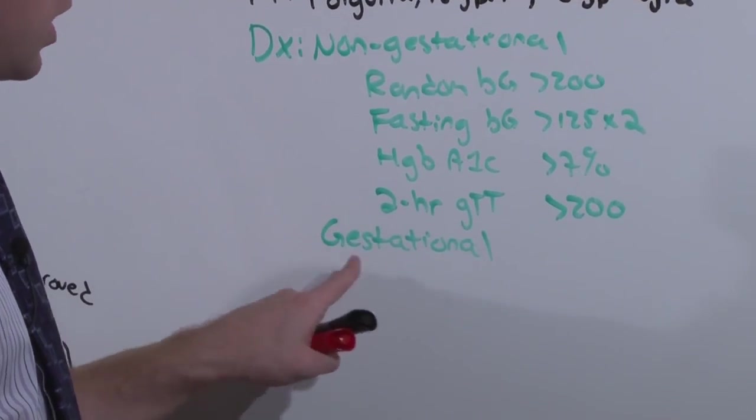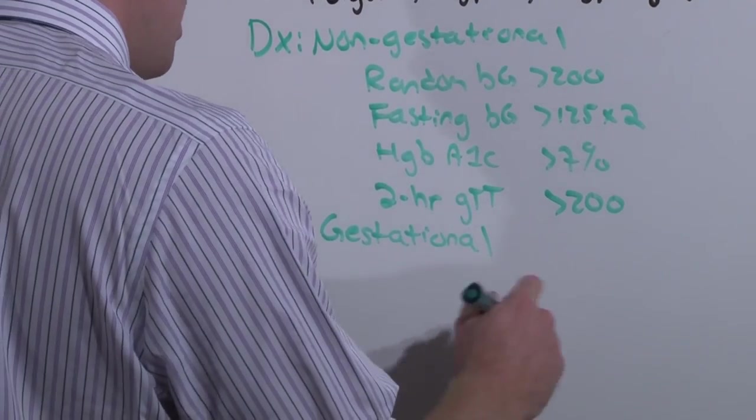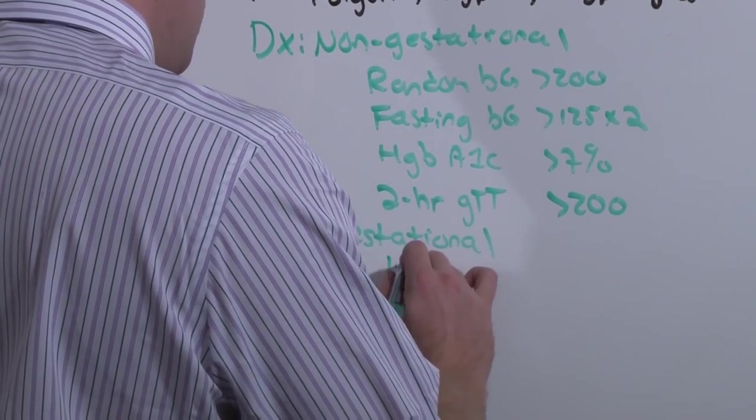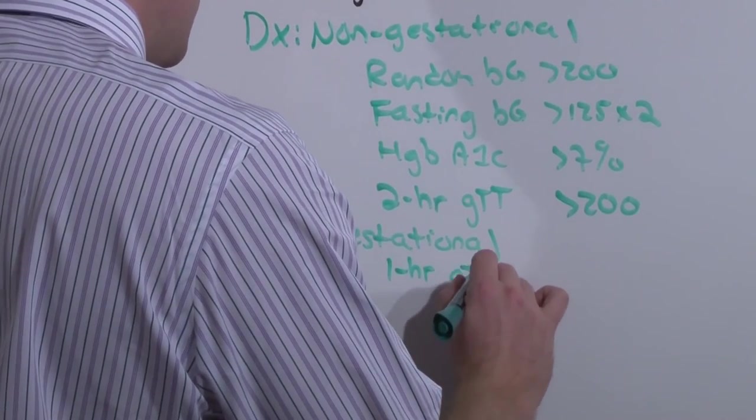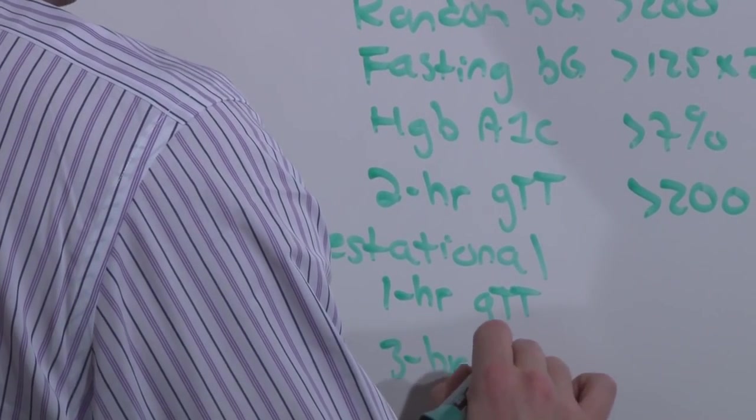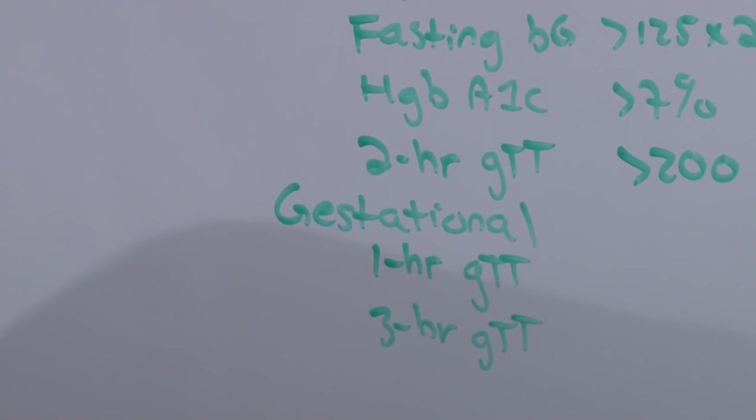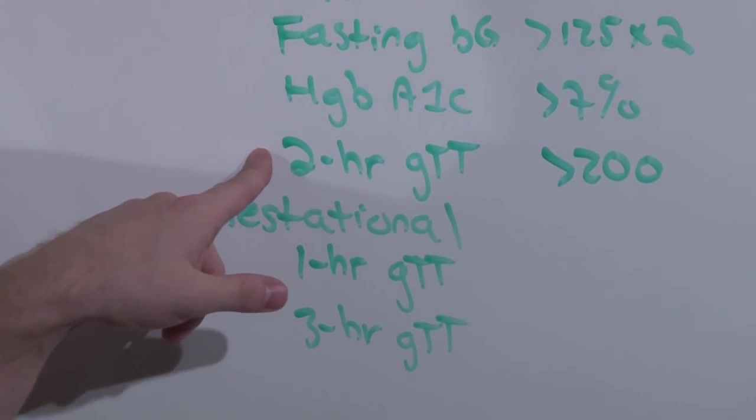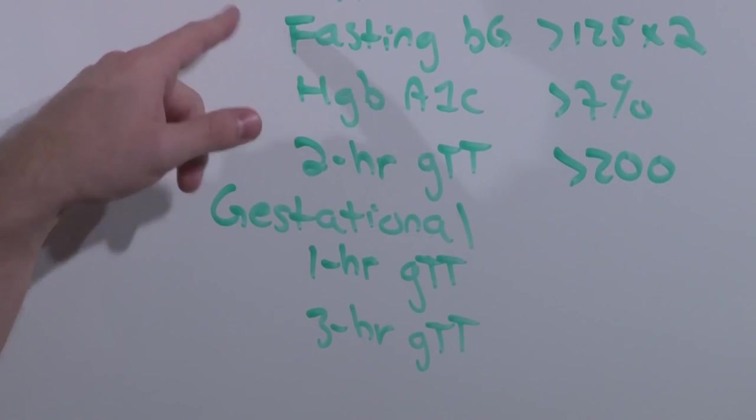Because a lot of OBs are going to deal with gestational diabetes. Not very many will deal with non-gestational. And so to diagnose gestational diabetes, and you'll see this later on in Obstetrics Complications, you're going to use the 1 hour glucose tolerance test, and if that's positive, follow it up with the 3 hour glucose tolerance test. And I say that because I don't want you to confuse it with the 2 hour glucose tolerance test of non-gestational diabetes.